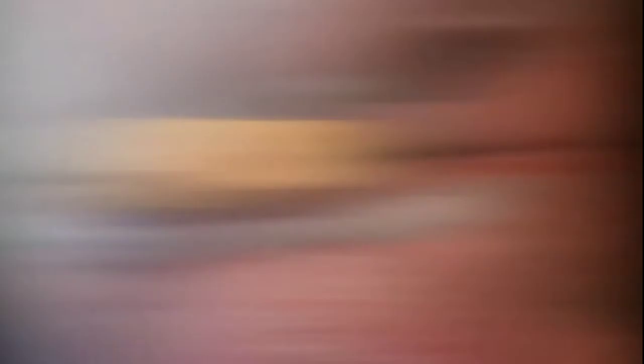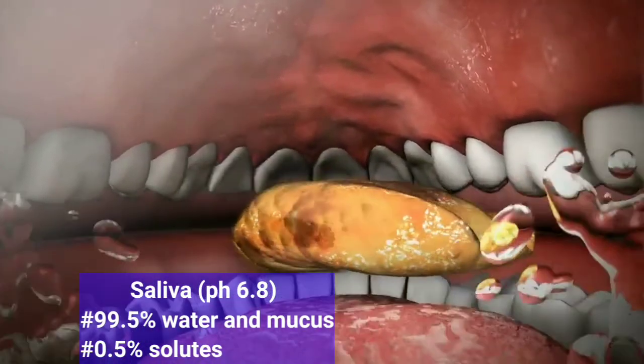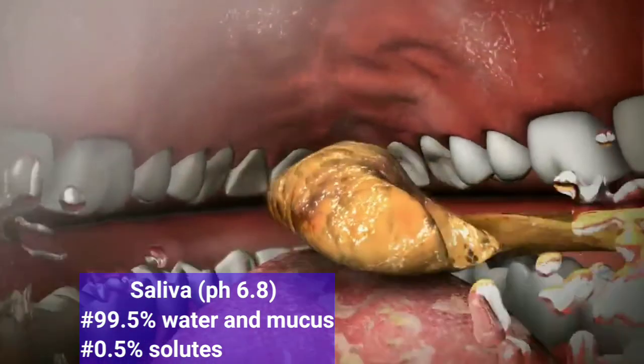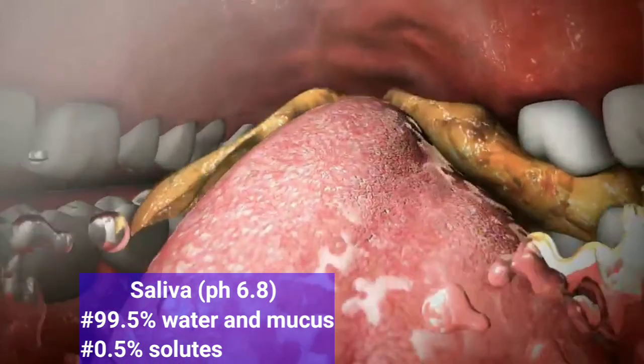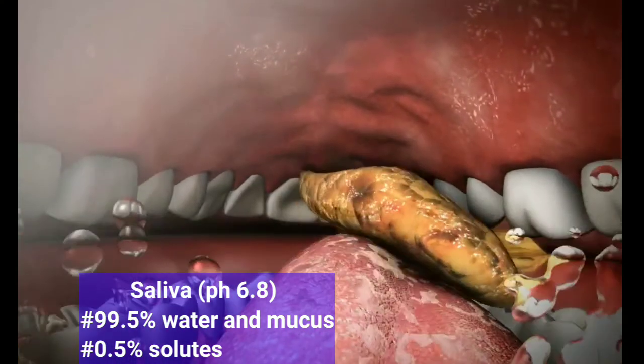Before moving forward, let's have a look at some points about our saliva. Saliva has a pH of 6.8 and is released up to 1.5 liters per day. Saliva is 99.5% water and mucus, and the rest 0.5% is solutes. These solutes have ions like sodium, potassium, chlorine, bicarbonates, and phosphates.